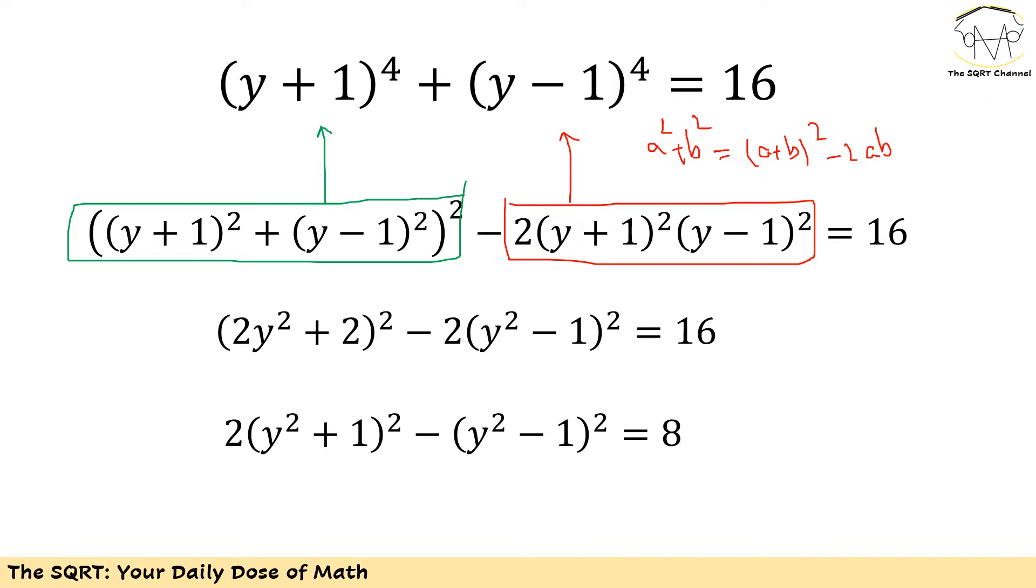Now to simplify it further, I can just try to simplify each term separately. For the first one, I have power of 2 of (y + 1) plus power of 2 of (y - 1). I'm going to rewrite it as 2 times (y^2 + 2), and at the end I need to take power of 2 of this. For the second term, I'm going to rewrite it as 2 times (y^2 - 1) to the power of 2.